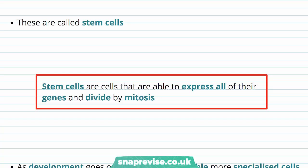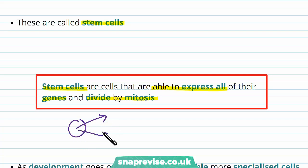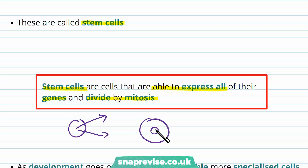These types of cells which aren't specialized we call stem cells. By definition, stem cells are cells that are able to express all of their genes and divide by mitosis. Stem cells are able to divide and make more stem cells by mitosis, but also all of the genes in our genome they're able to turn on. What this is saying is that they have a complete instruction manual for the whole body inside of them, and they're able to turn on any gene they choose and become any type of differentiated cell they want to.